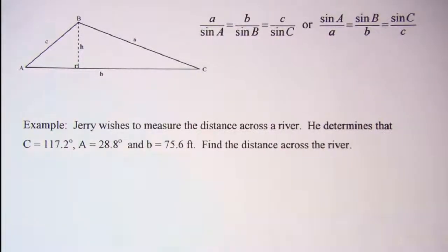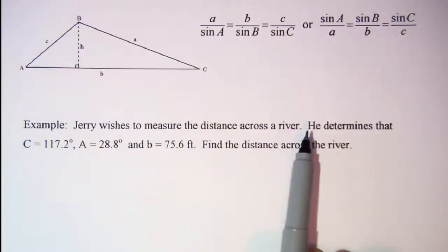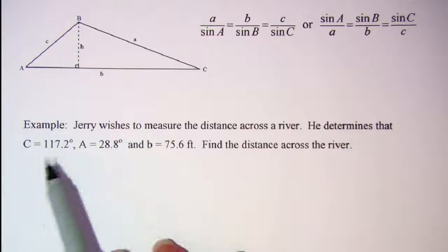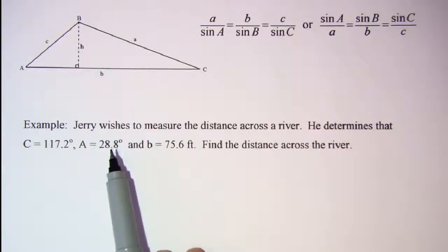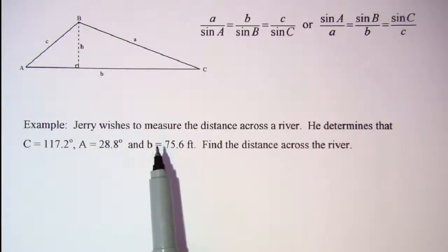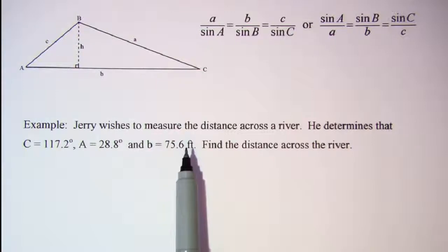The problem that we'll be doing is Jerry wishes to measure the distance across a river. He determines that C is equal to 117.2 degrees, A is 28.8 degrees, and side B is 75.6 feet.